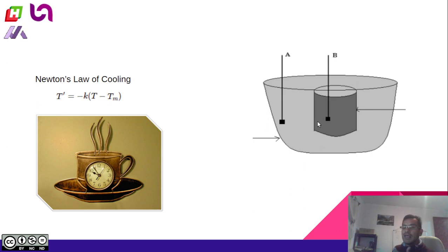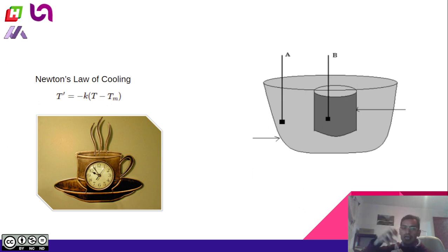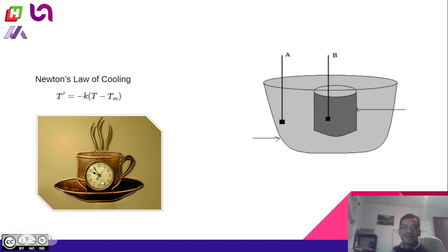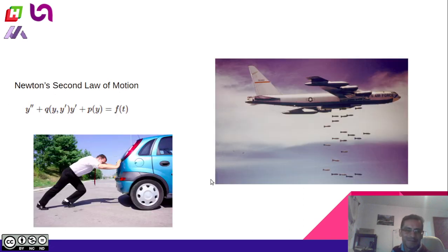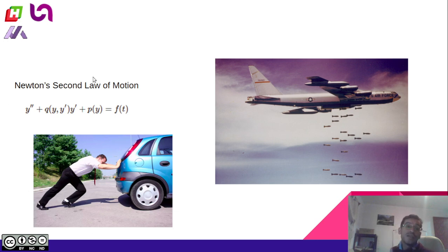Newton's law of cooling tells us about the time and temperature of a container or a body inside another object, and how the temperature changes through time. By this way, we can know how much time we are going to have our coffee hot, if we like coffee. Differential equations are also important for Newton's second law of motion.